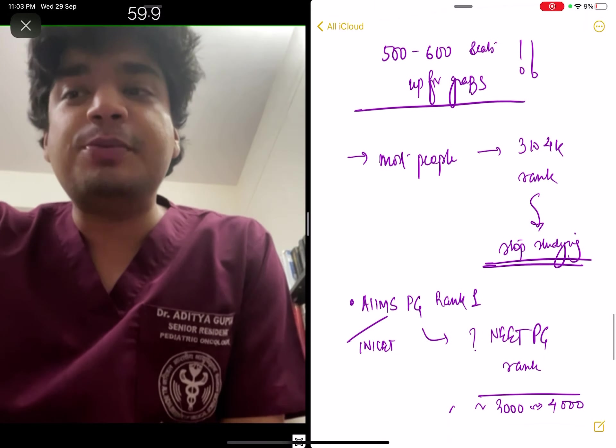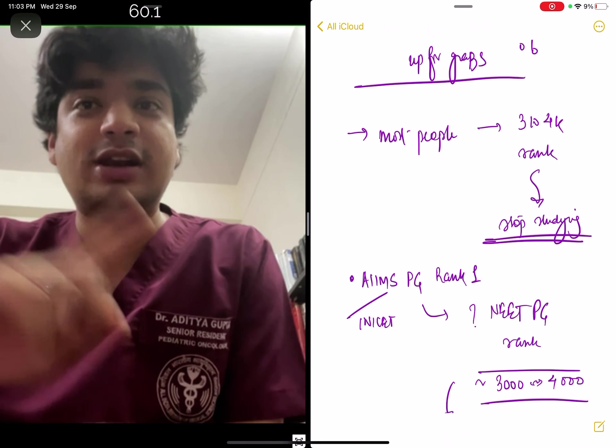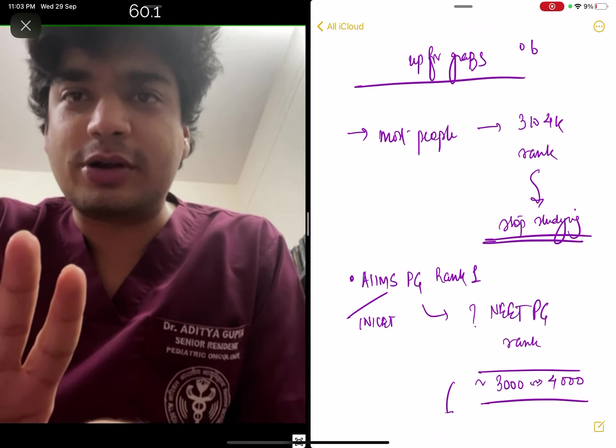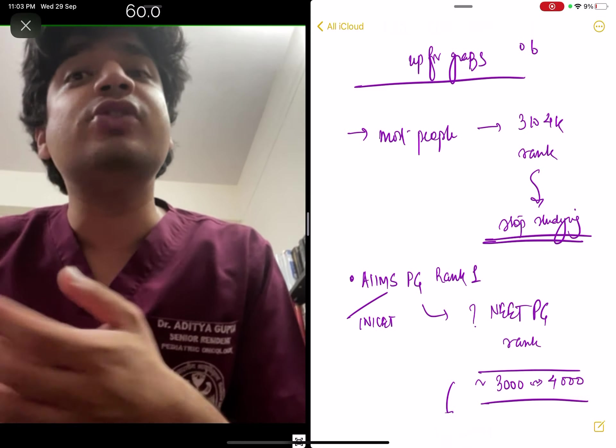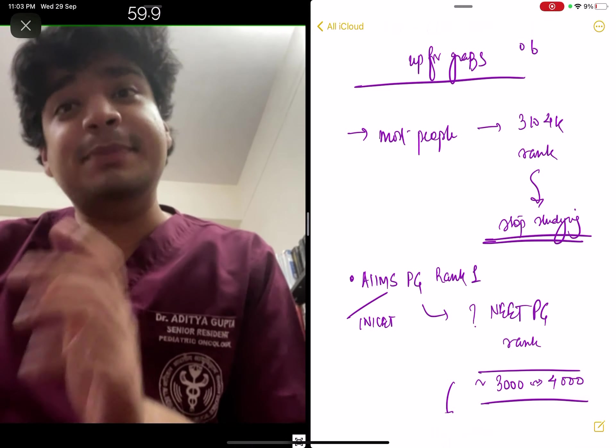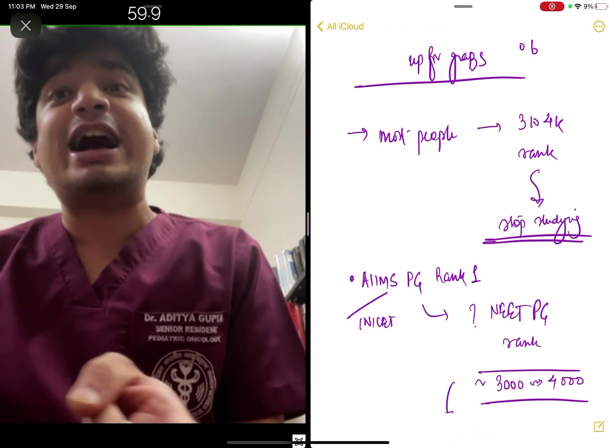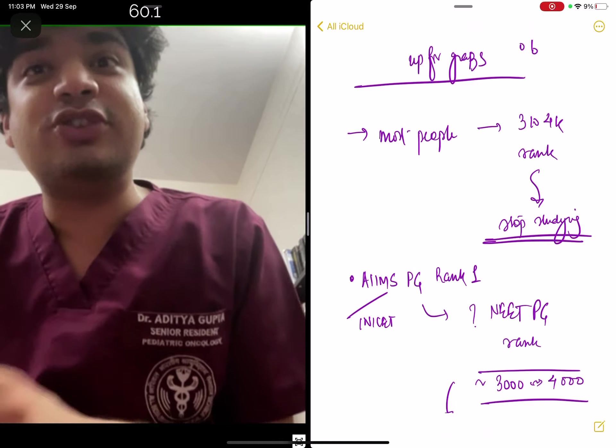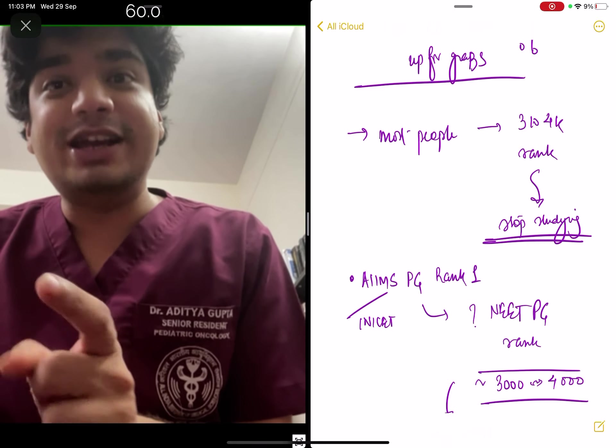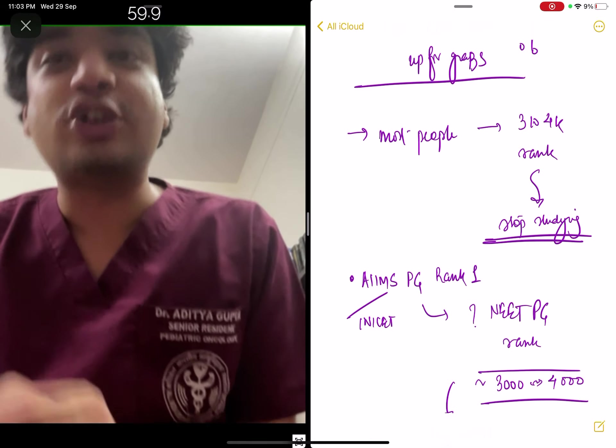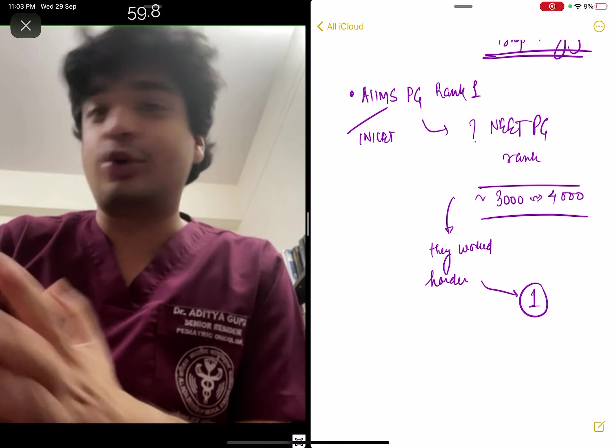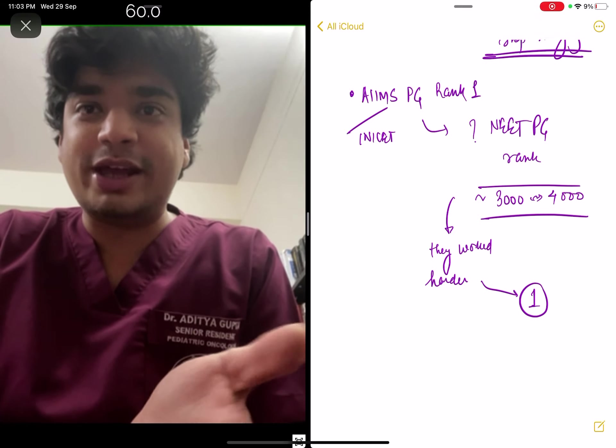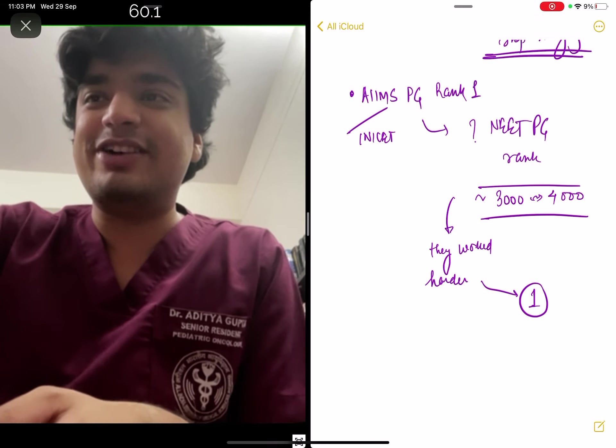Remember, AIIMS PG rank 1, or INI SS PG rank 1 last time, is never NEET PG in top 100. It's not really NEET top 10. Why? Because they already have stopped studying. They probably might be more intelligent, might actually, if they had continued studying, might have gotten into an institute of national importance. But we stop studying. Don't do that. This is your good chance to work hard. I have already given a video on the schedule. So go ahead. Thank you and have a nice day.